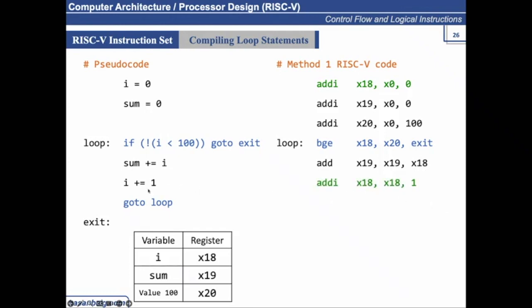Similarly, addi, incrementing the value of i by 1. And then, how will you jump back to loop? The same, beq, x0, x0 in loop. So it will jump to loop. And then we should also have exit at the bottom. Understand?